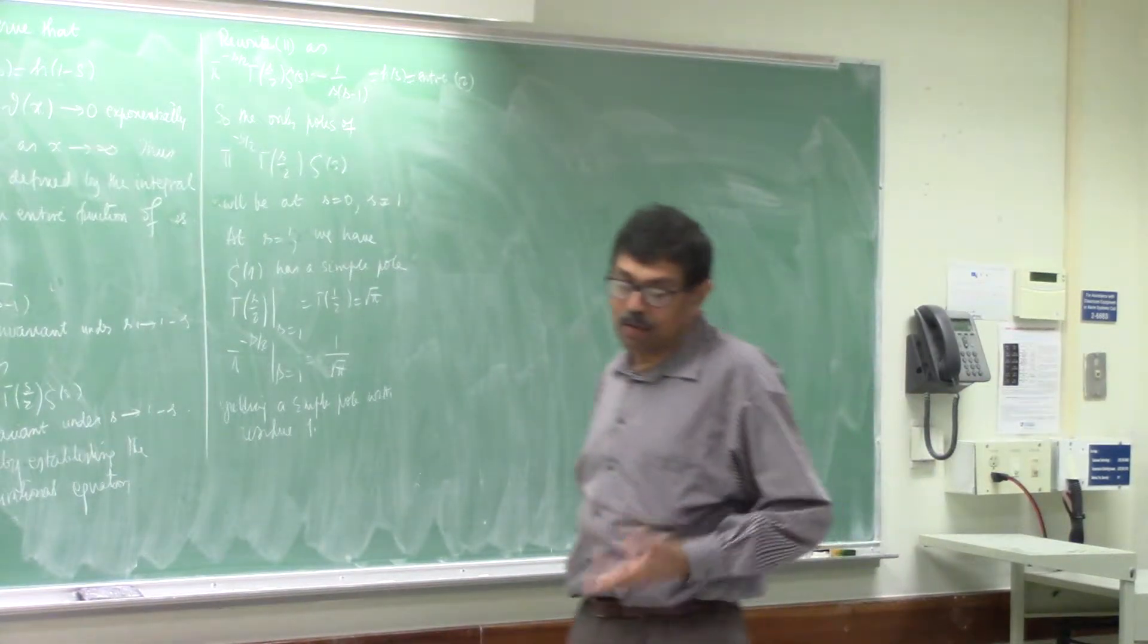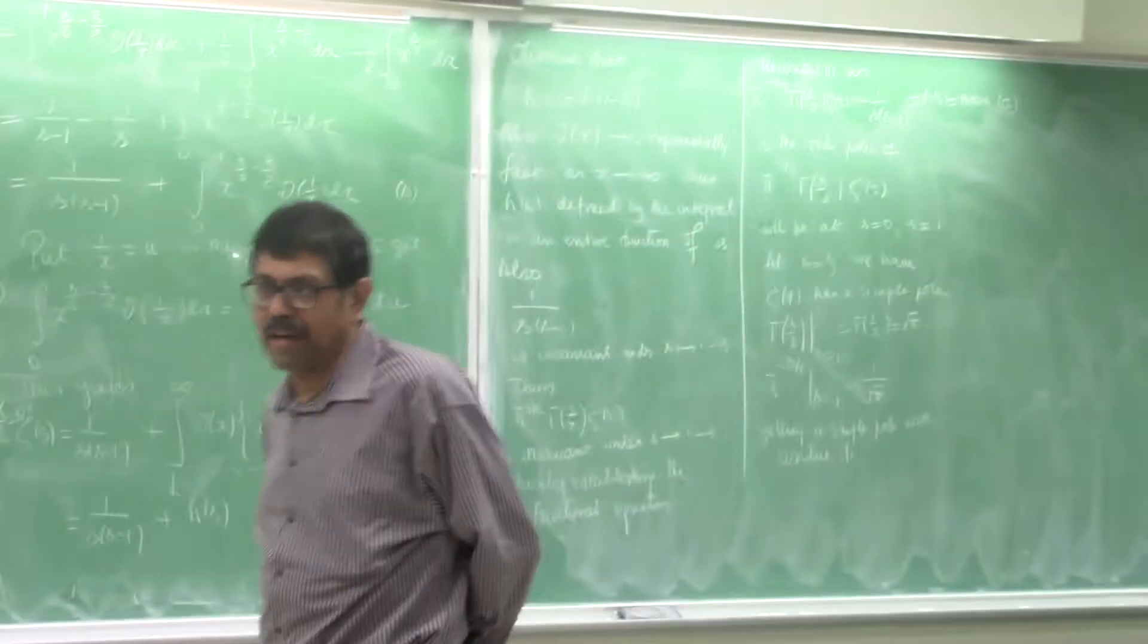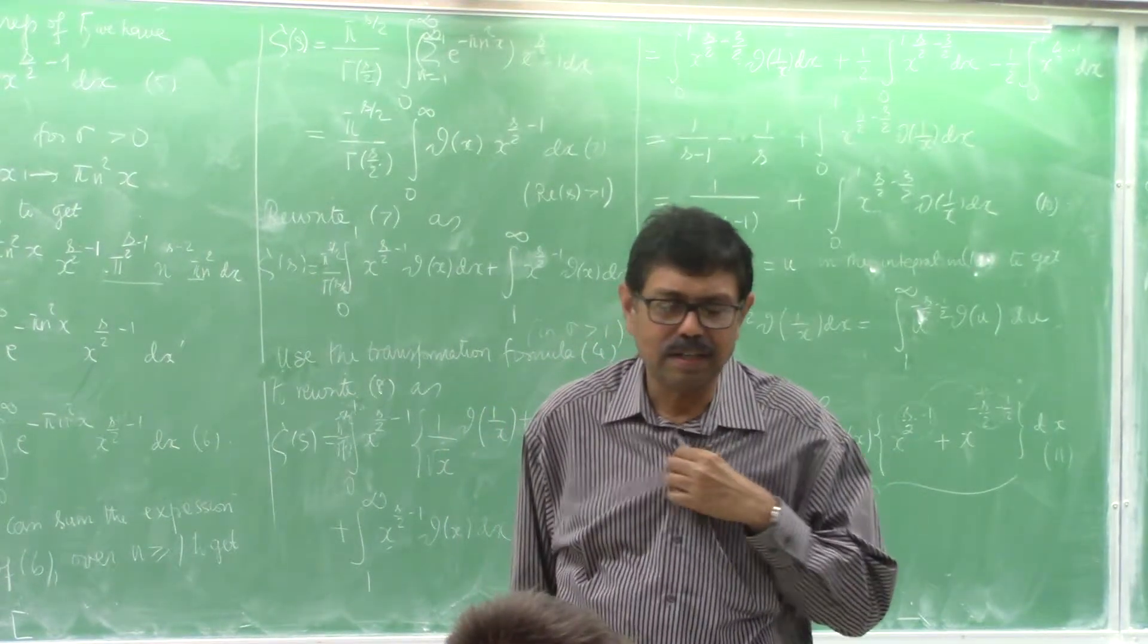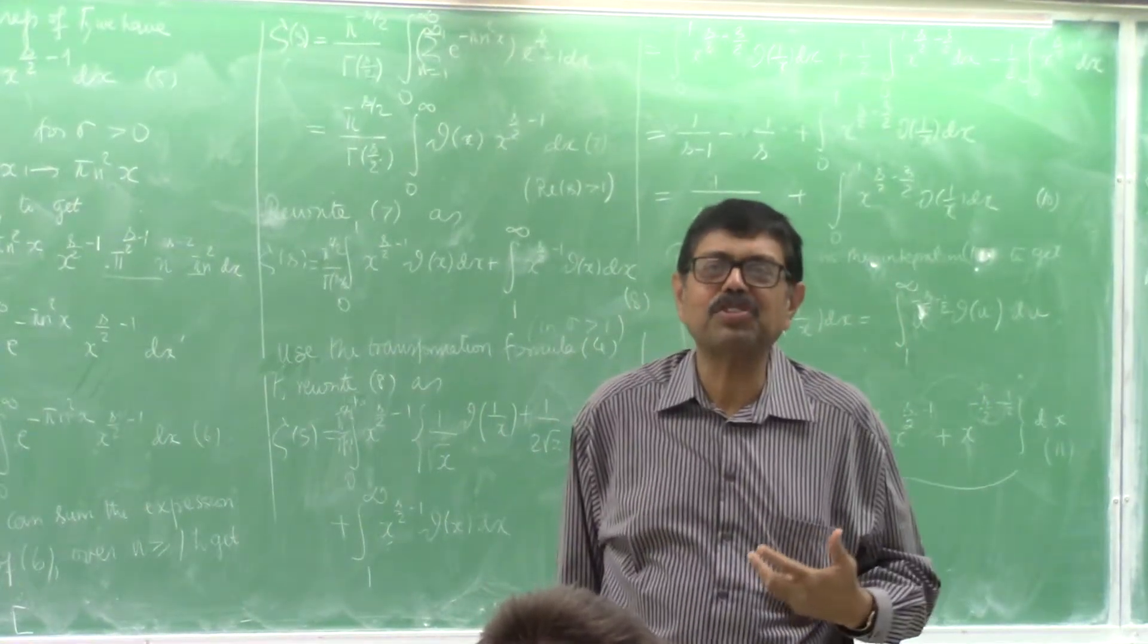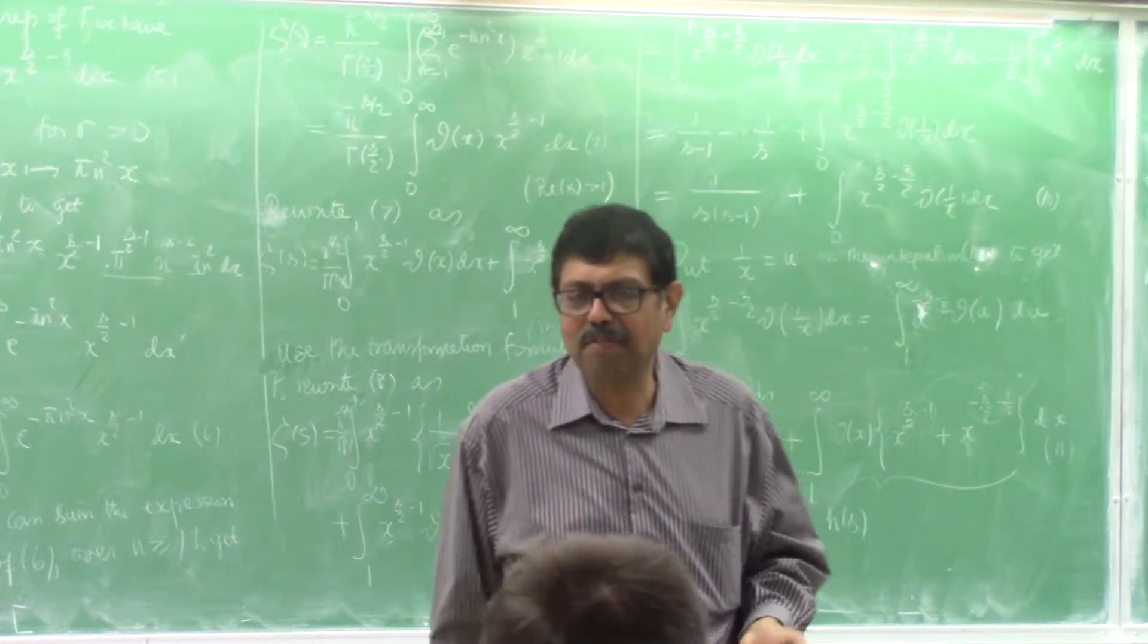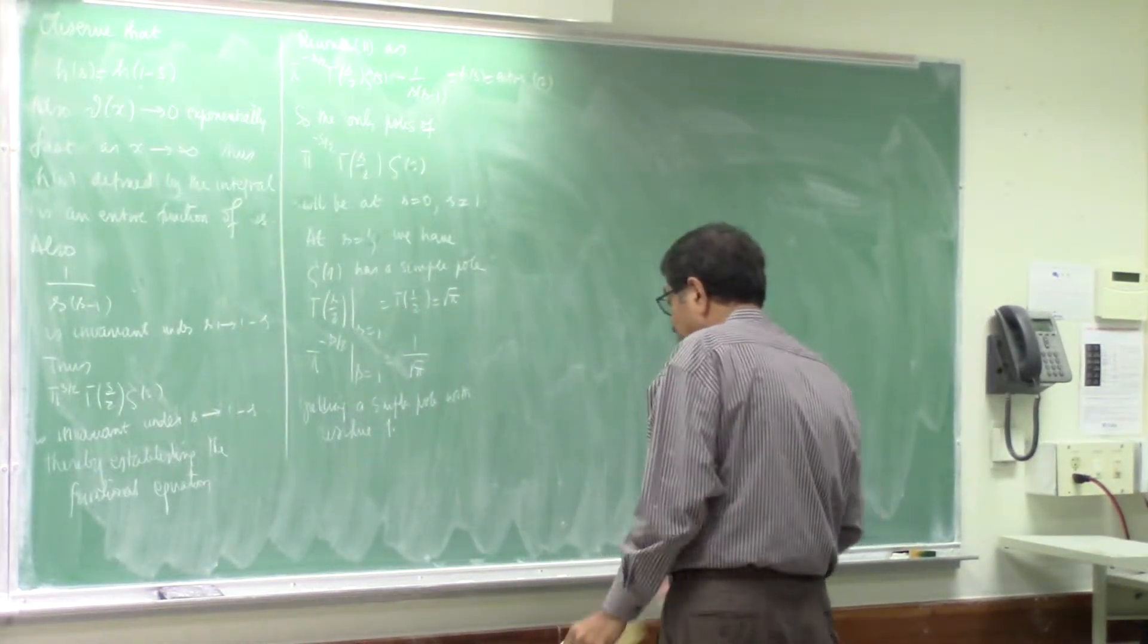You know, at one time, I remember American Mathematical Monthly had a span of two years. I was then a graduate student in India. One more proof that summation 1 over x squared is pi squared over 6. So similarly, people are giving different proofs of gamma half equal to the square root of pi. It's coming from different angles. So this is coming from just comparing to the poles of Riemann zeta function.